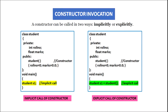In another example, we define class student with private data members roll number and marks, and a constructor initializing roll number by 0 and marks by 0.0. In main we give the statement student S1 = student() with a set of parenthesis. Here the object S1 is created and the constructor is invoked. Since we are calling the constructor explicitly, this type of call is called an explicit call of constructor.